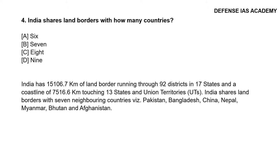Question 4: India shares land borders with how many countries? The correct answer is option B. India has 15,106.7 km of land border running through 92 districts in 17 states, and a coastline of 7,516.6 km touching 13 states and union territories. India shares land borders with 7 neighboring countries: Pakistan, Bangladesh, China, Nepal, Myanmar, Bhutan and Afghanistan.